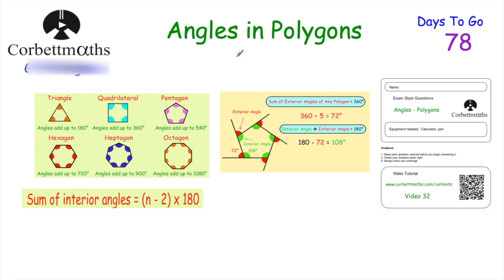In this video we've gone through angles and polygons: what the angles in polygons add up to — 180 degrees for triangles and so on — and the formula (n − 2) × 180. Also, all exterior angles always add together to be 360 degrees, and an interior angle and an exterior angle always add together to be 180 degrees.